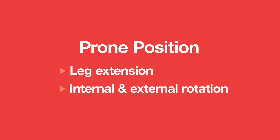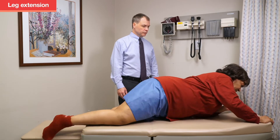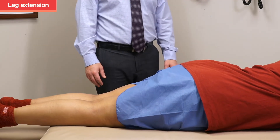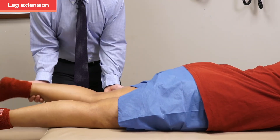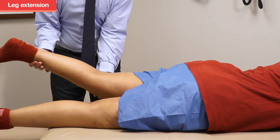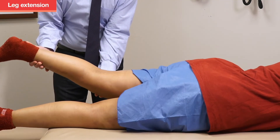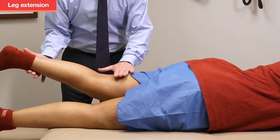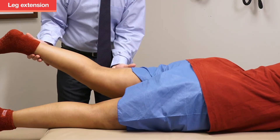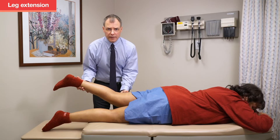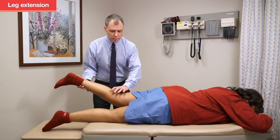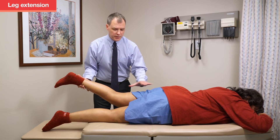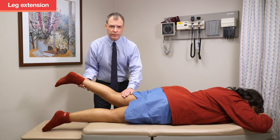Now we'll have the patient move onto her stomach into the prone position. The first thing to check is leg extension — lift the leg up and ask the patient to keep it up. She has no pain and 5 out of 5 strength. By keeping the knee bent, you limit the muscle group to the gluteus maximus, removing the hamstring component of extension.